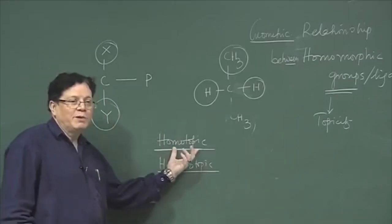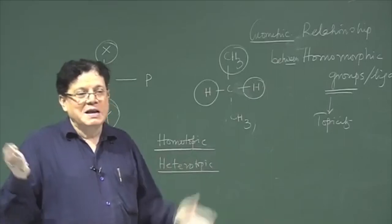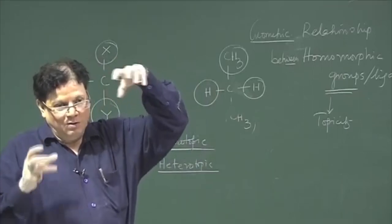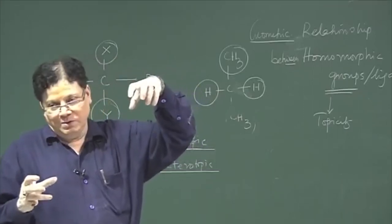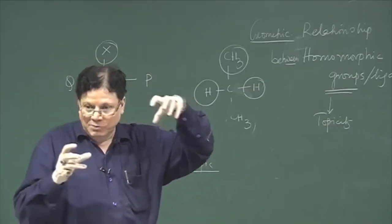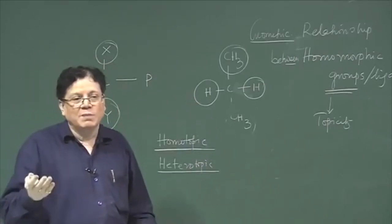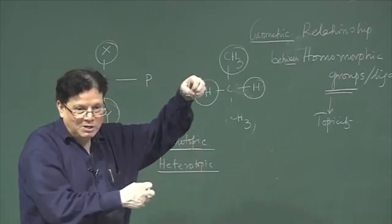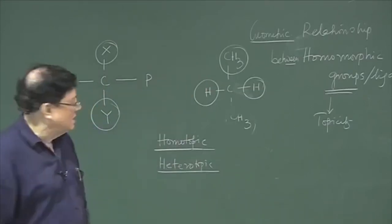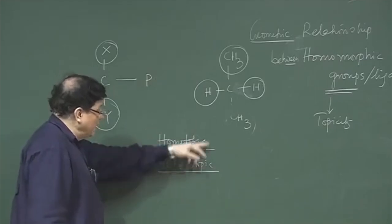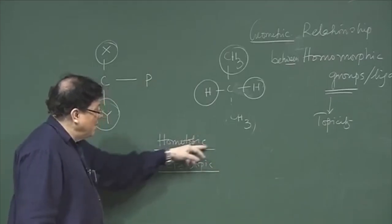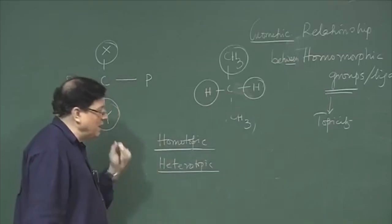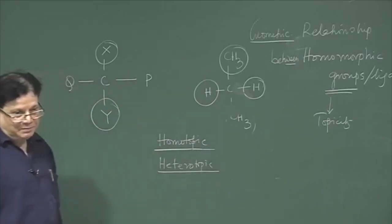First of all, they have to be homomorphic — they have to be the same. You cannot compare chlorine with fluorine; they are different ligands. We are comparing either two chlorines, two methyls, two hydrogens, or two fluorines. But out of those, you can have various situations where the two hydrogens can be homotopic or heterotopic depending on the structure of the molecule.